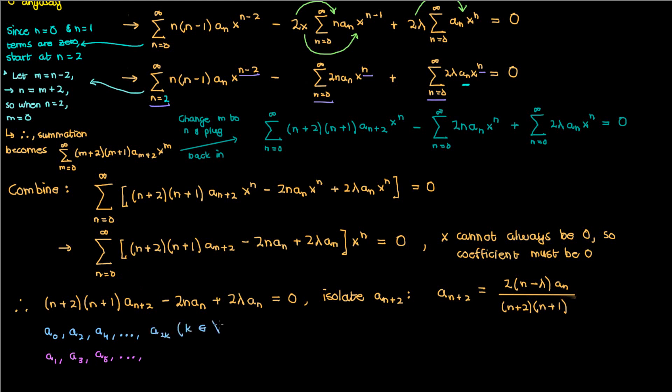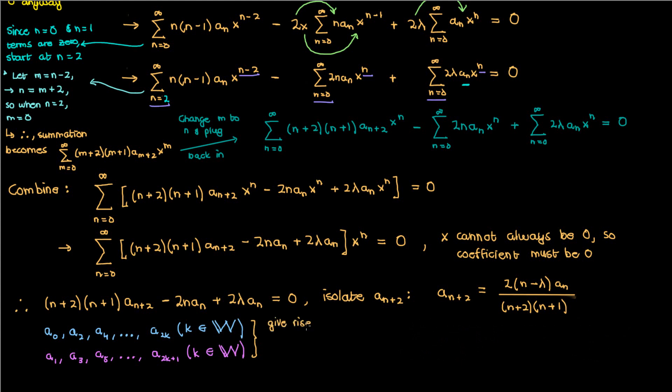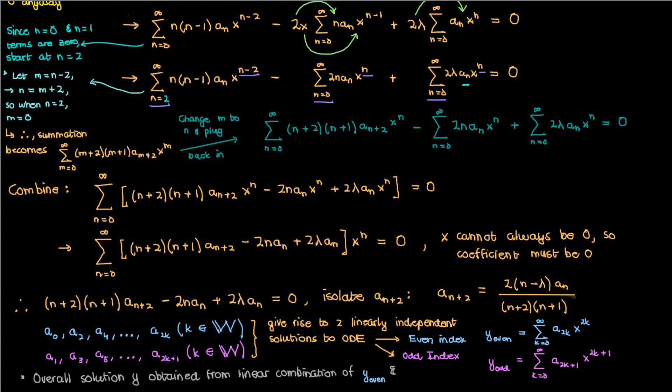My first sequence is for even indexed coefficients a_0, a_2, all the way to a_{2k}, where k is some whole number. And then my second sequence is for odd indexed coefficients a_1, a_3, all the way to a_{2k+1}, where k is again some whole number. Since these even and odd sequences are relatively independent from each other, we can say that each sequence corresponds to one linearly independent solution to this differential equation. I'll call the solution corresponding to the even sequence y_even, which is given by the sum of the even indexed coefficients multiplied by the even powers of x. And then meanwhile I'll call the solution corresponding to the odd sequence y_odd, given by the sum of the odd indexed coefficients multiplied by odd powers of x. A linear combination of y_even and y_odd would then result in my overall solution y to this Hermite differential equation.